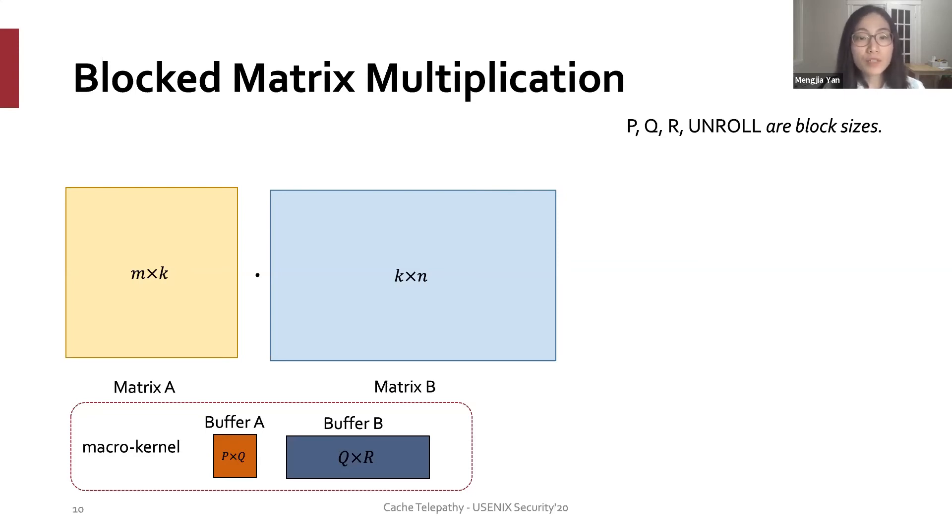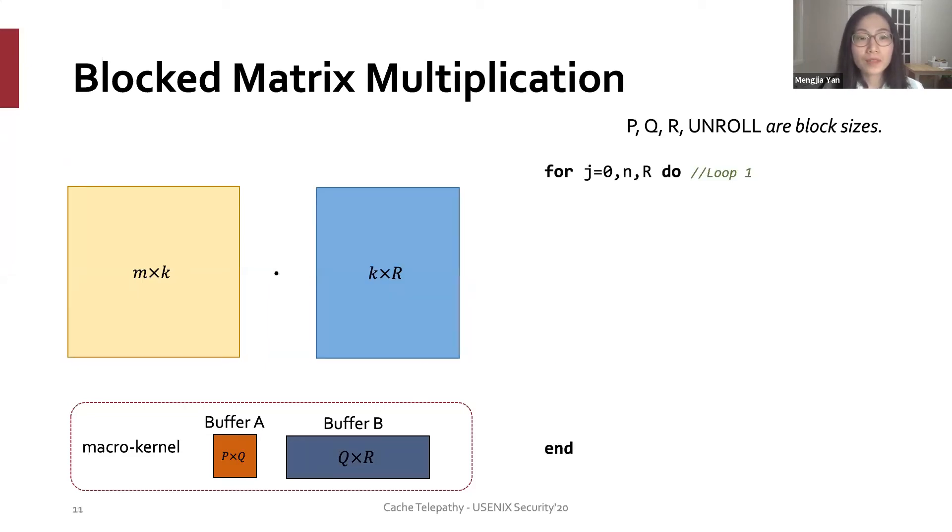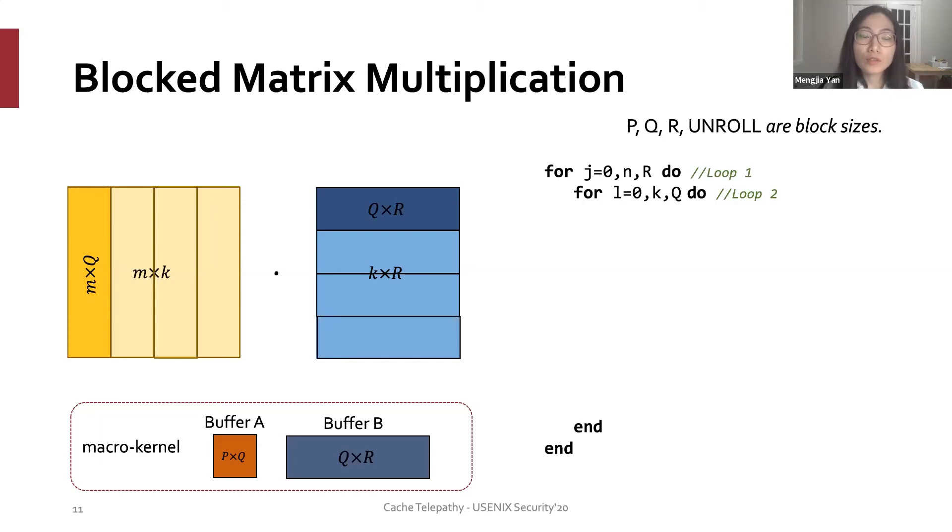The nested loop is implemented as follows. The algorithm first divides matrix B into multiple k by r blocks. It corresponds to the outermost loop, we call it loop 1. Then, it further divides matrix A into multiple m by q blocks and further divides each block in matrix B into q by r sub blocks. This corresponds to the code of loop 2.